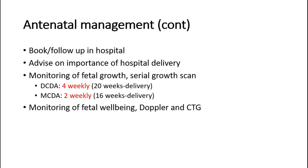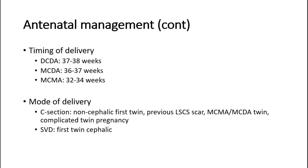For the timing of delivery in uncomplicated twin pregnancies: DCDA twins can deliver at 37 to 38 weeks; MCDA twins at 36 to 37 weeks after corticosteroid cover; MCMA twins can deliver at 32 to 34 weeks after discussion with the pediatrics team to confirm ventilator availability and with corticosteroid cover. Caesarean section is recommended for non-cephalic first twin, previous LSCS scar, or MCMA twins. It may also be considered for death of one fetus, MCDA twins, other complicated twin pregnancies, or parental request.